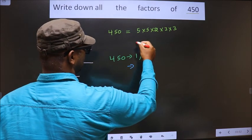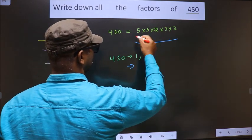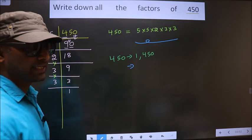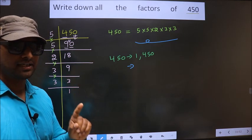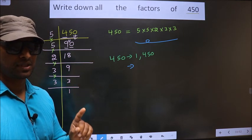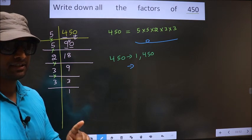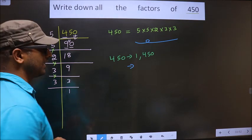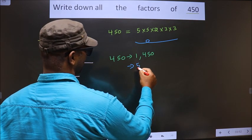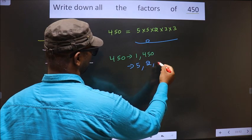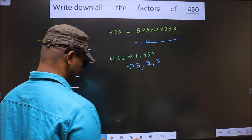Now from these prime factors, you select one different number at a time. Like that, how many numbers do we get? We get 5, 2, and 3.